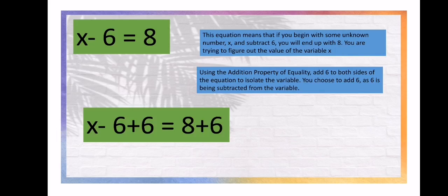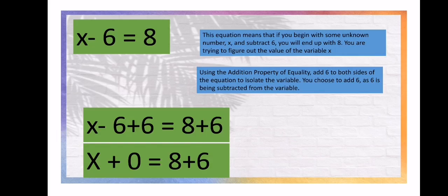So, X minus 6 equals 8. We add 6 to both the left and right sides. So, X minus 6 plus 6 on the left, and 8 plus 6 on the right. Negative 6 plus 6 equals 0, so X plus 0 equals 8 plus 6. Since 0 has no value, we are left with X equals 14.